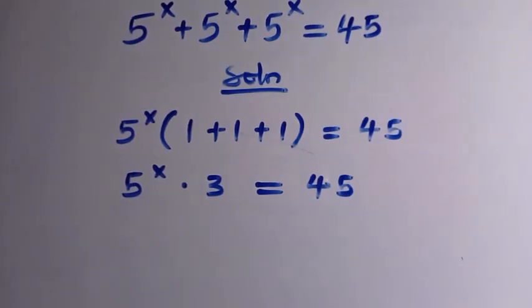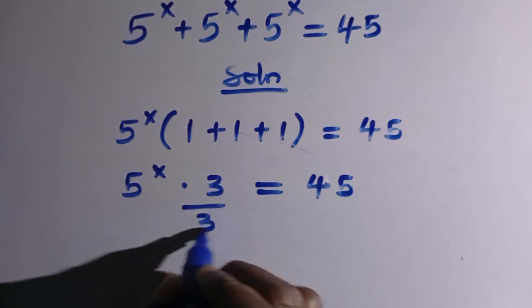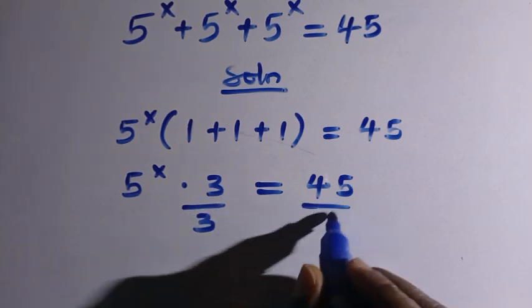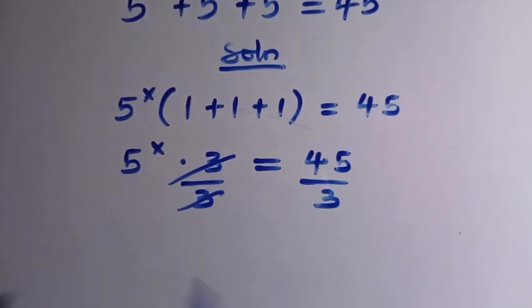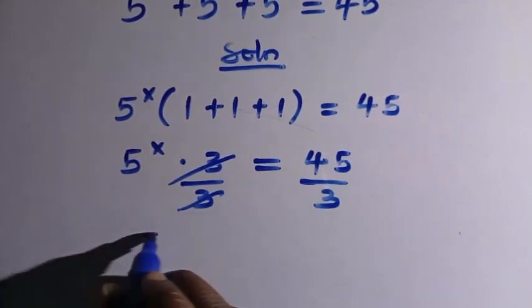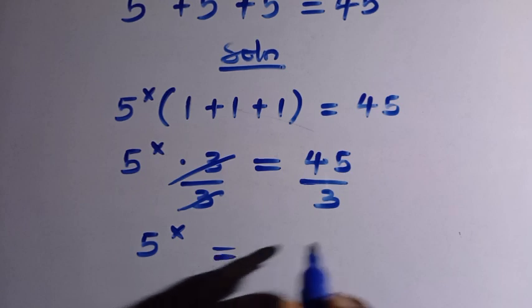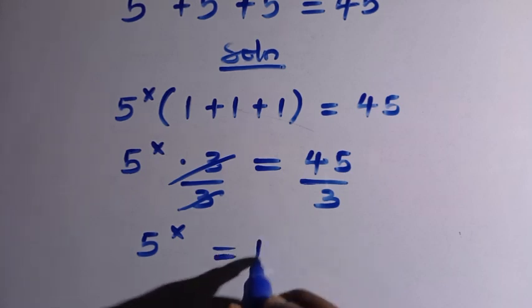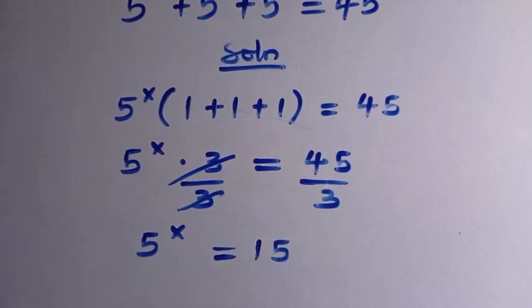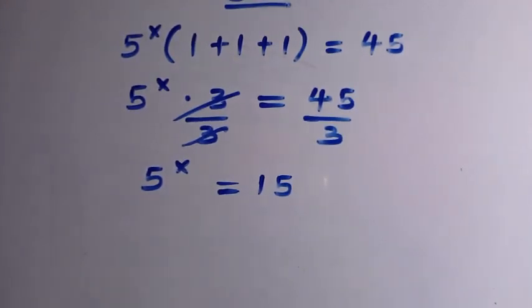So let's try to reduce this value. We have to divide both sides by 3. By dividing both sides by 3, the 3 cancels, and we are going to have 5 power x equals 45 divided by 3, that is 15 times. We have 5 power x equals 15.